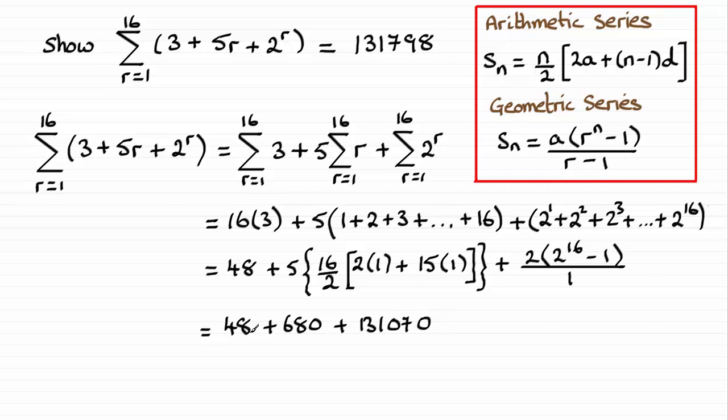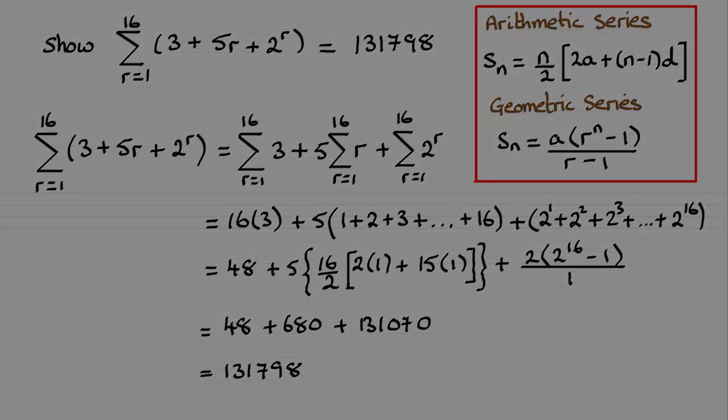And if you add all of these three terms together, you end up with the result we've got to show. 131,798. Alright. So I hope that's given you some idea how to do that if it's causing any problems. Thank you.